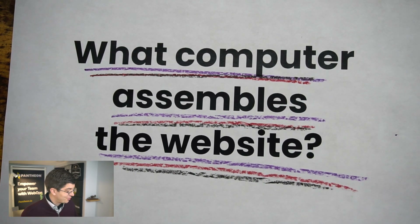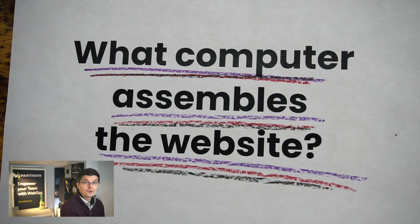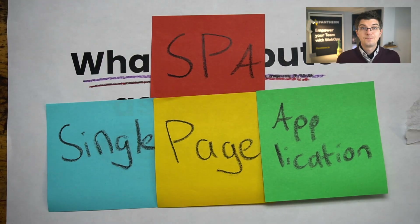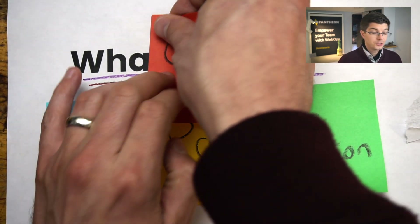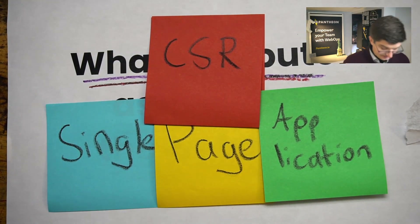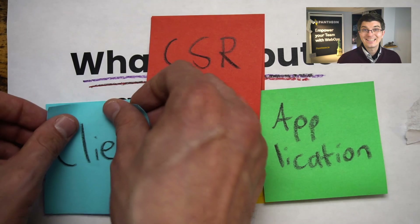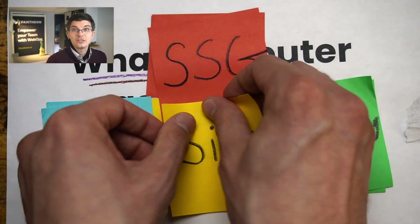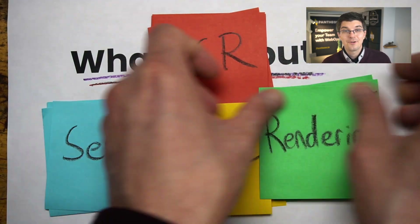In the last decade or so of website operations, there's been this outbreak of initialisms that has overwhelmed a lot of web teams. There's the SPAs, Single Page Applications. SPAs rely on CSR, Client Side Rendering. SSG, Static Site Generation. There's SSR, Server Side Rendering.